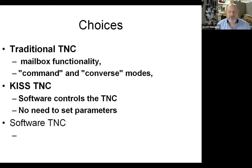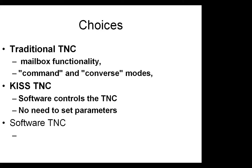The main distinction is that classical TNCs were designed around a human-centered user interface. When people started automating things like email transfers, that became very hard for computers to parse — the scripting ran to pages. The KISS TNC, on the other hand, was designed to be totally computer-centric. There was no user interface. So it was much easier to automate, and therefore many more things were practical with a KISS TNC rather than a traditional TNC.